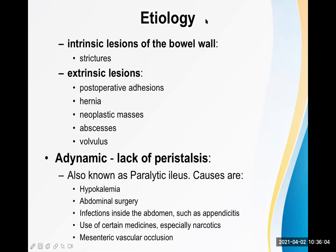Extrinsic lesions that can lead to intestinal obstruction include post-operative adhesions, hernia, neoplastic masses, abscesses, and volvulus. Adhesions are probably the commonest cause of intestinal obstruction today, because many patients undergo abdominal surgery. Once the peritoneal cavity is opened, adhesions cannot be stopped — two loops of bowel may fuse and result in obstruction.